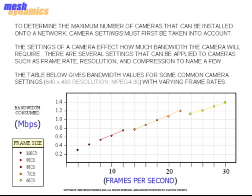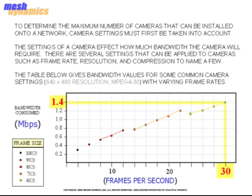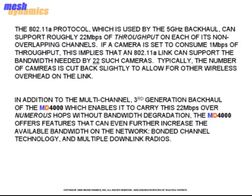To determine the maximum number of cameras that can be installed onto a network, camera settings must first be taken into account. The settings of a camera affect how much bandwidth the camera will require. There are several settings that can be applied to cameras such as frame rate, resolution, and compression, to name a few. The table below gives bandwidth values for some common camera settings with varying frame rates. The 802.11a protocol, which is used by the 5 GHz backhaul, can support roughly 22 Mbps of throughput on each of its non-overlapping channels. If a camera is said to consume 1 Mbps of throughput, this implies that an 802.11a link can support the bandwidth needed by 22 such cameras.